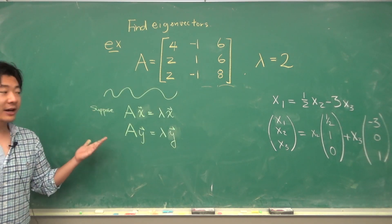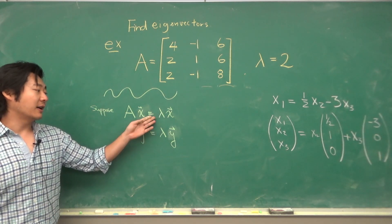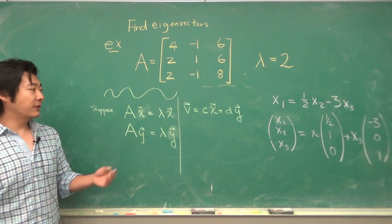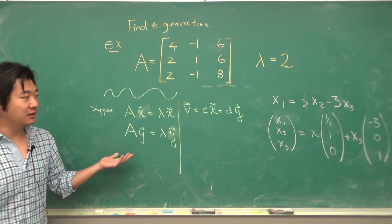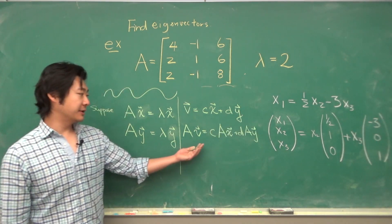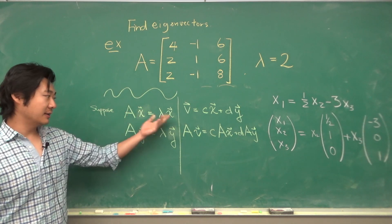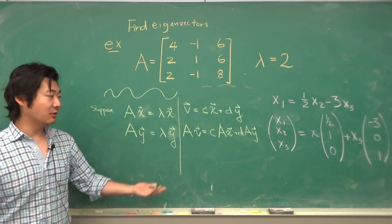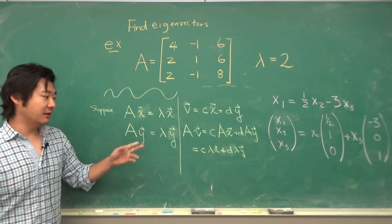Now suppose we have two eigenvectors, x and y, that correspond to the eigenvalue lambda. Let's consider a vector v, which is just a linear combination of these two eigenvectors. Well, if we multiply A to this vector, we have bilinearity that this is just c times Ax plus d times Ay. But Ax is lambda x, and Ay is lambda y.